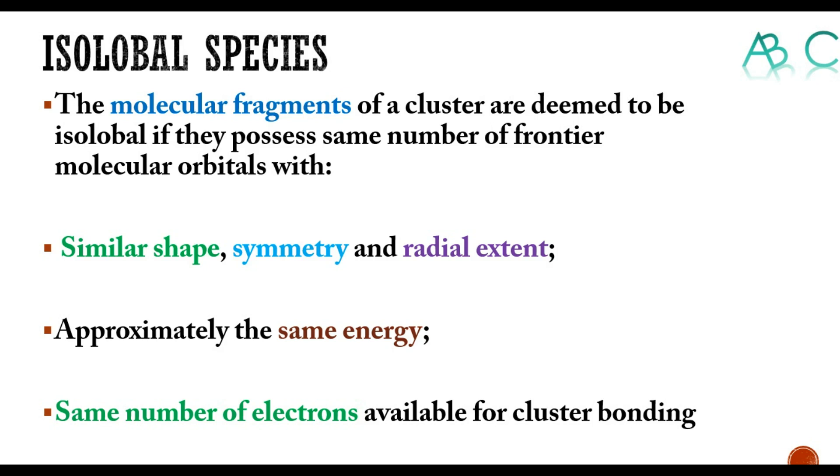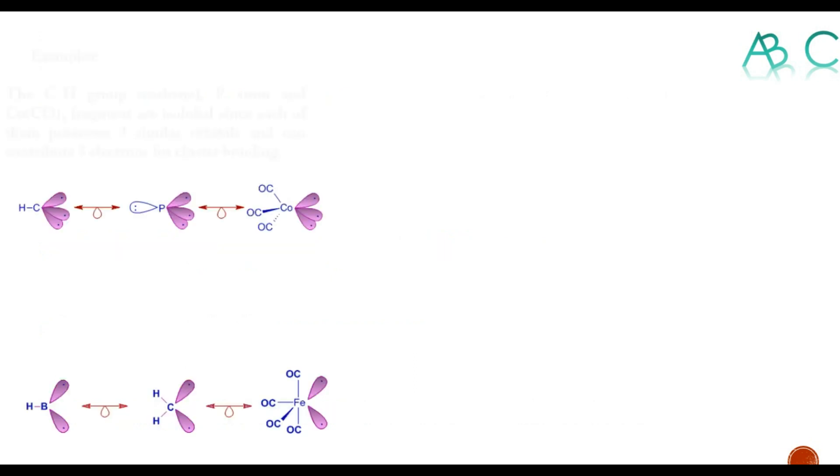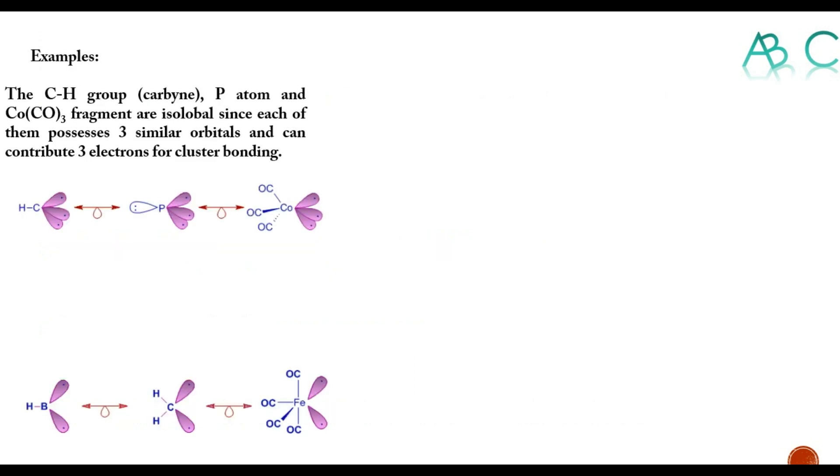Isolobal species, as its name prescribes - iso means same, lobal means these atomic lobes having same number of lobes with the same number of electrons. We can see two examples here. In first example, the CH group, P atom, and Co(CO)3 are isolobal species.